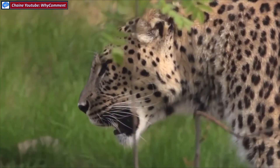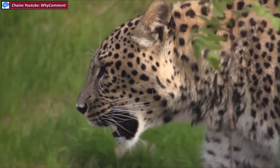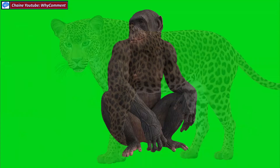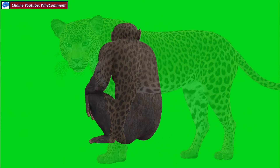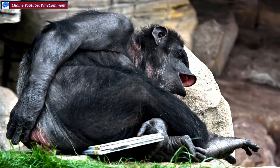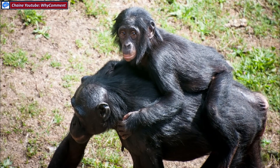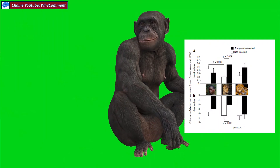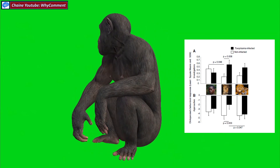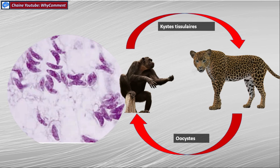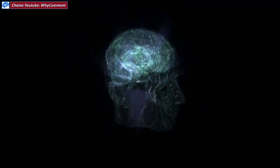Selon une étude parue dans Nature Current Biology en février 2016, le parasite agirait aussi sur le comportement des chimpanzés, les mammifères les plus proches de nous. Les chercheurs du CNRS ont imprégné les enclos de 33 chimpanzés infectés par le parasite avec de l'urine de léopard et de l'urine humaine. Les singes infectés éprouvaient une attraction fatale pour l'urine du félin — certains la léchaient — alors que les singes non infectés fuyaient instinctivement cette odeur. Le parasite agirait donc pour faciliter la prédation du singe par le léopard afin de pouvoir finir son cycle.